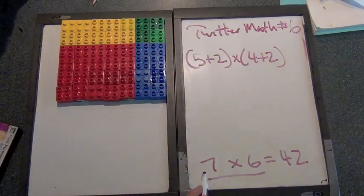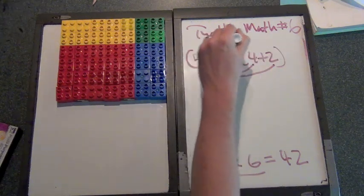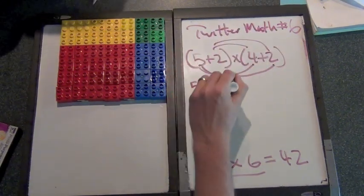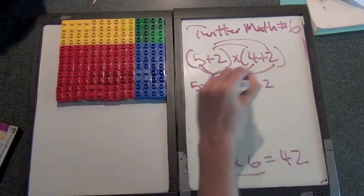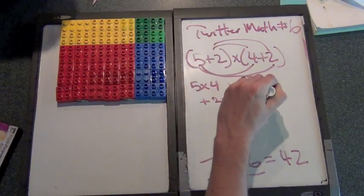But we can look at it also this way as five times four, five times two, two times four, and two times two. So we get five times four plus five times two plus two times four plus two times two.